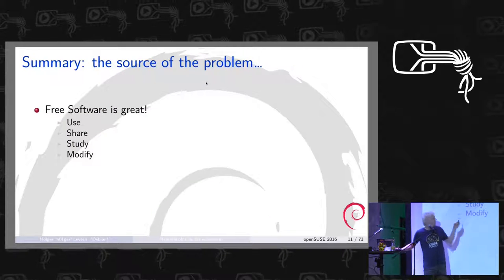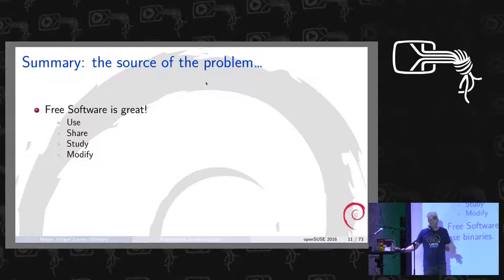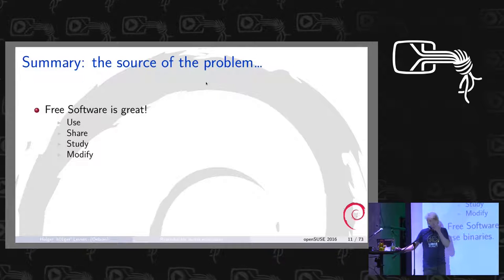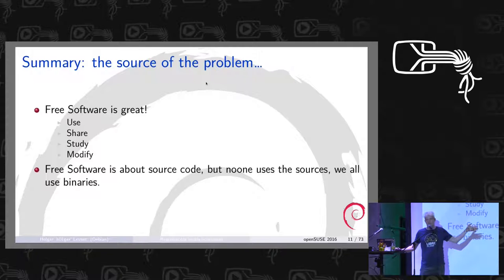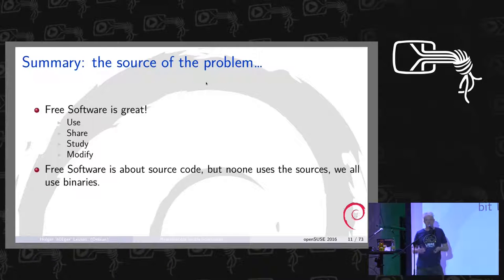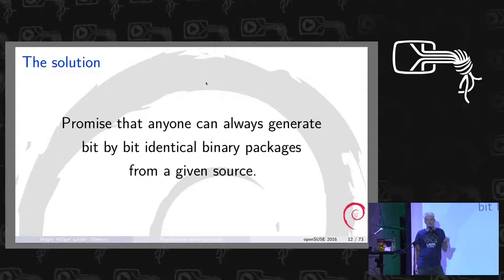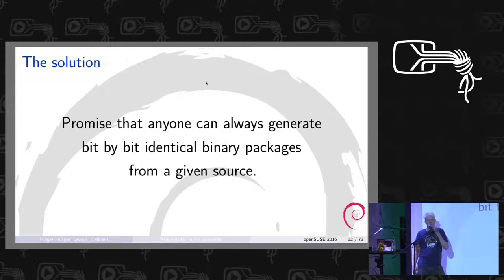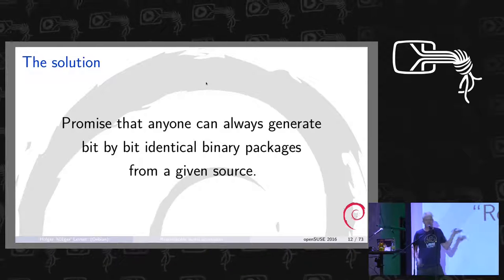The problem is that free software is great — you can share it, modify it, use it, pass it on. But nobody uses the source. We all use binaries, and there is no way to see what a binary comes from. All the freedoms of free software apply to sources, but we all use binaries. Our solution is that we ensure anyone can always regenerate bit-by-bit identical binaries from the same source. If you can do this, you know the binary comes from the source, and looking at the source makes sense.